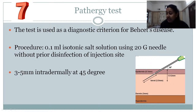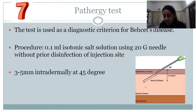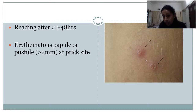In the pathergy test, we inject 0.1 ml of isotonic saline using a 20-gauge needle. The technique is very important: we inject the needle at an angle of 30 degrees to the surface of the skin, with the beveled edge facing upward, only 3 to 5 mm deep. After 24 to 48 hours, we see an erythematous papule of more than 2 mm at the site of the prick, which is a positive test for Behcet's disease.